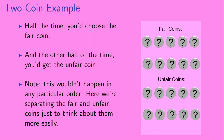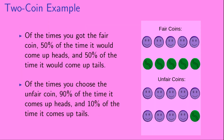These wouldn't happen in any particular order — we've separated the fair and unfair coins just to think about them more easily. Of the times you choose the fair coin, 50% of the time it comes up heads and 50% of the time it comes up tails. So of the 10 times out of our 20 trials that you choose the fair coin, we get 5 that come up heads and 5 that come up tails. Of the times that you choose the unfair coin, 90% of the time it comes up heads and 10% of the time it comes up tails. So out of our 10 trials where you chose the unfair coin, we've represented this as 9 trials that come up heads and 1 trial that comes up tails.